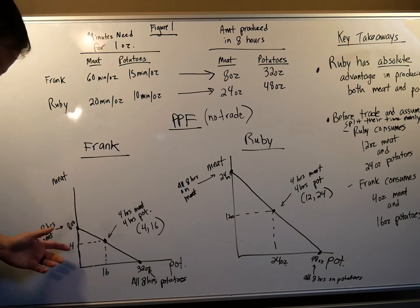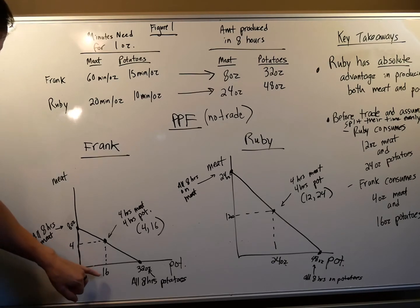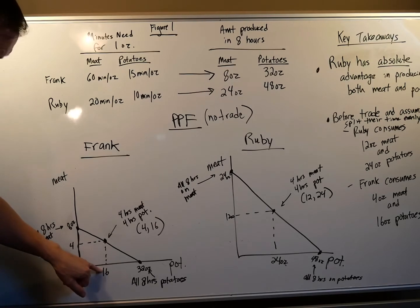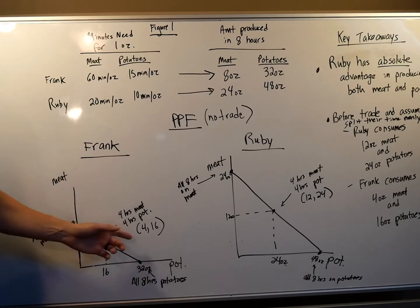But we know Frank is going to want some meat and potatoes. So let's assume he divides his time evenly and works four hours on meat, four hours on potatoes, and he meets in the middle. So if you divide eight in half, you got four and you divide 32 in half, you got 16. So if he spends four hours on meat, he'll get four ounces a day. If he spends four hours on potatoes, he'll get 16 ounces per day.